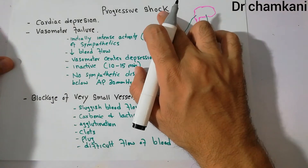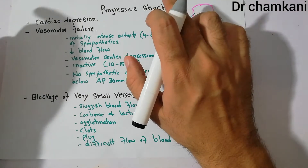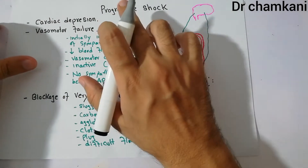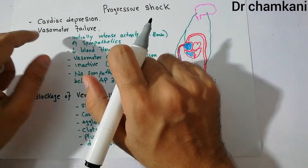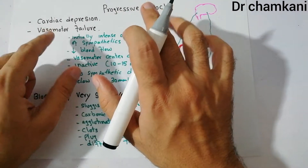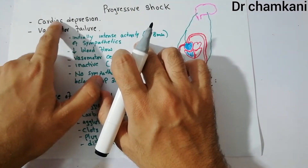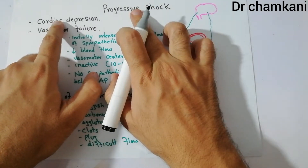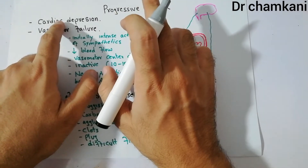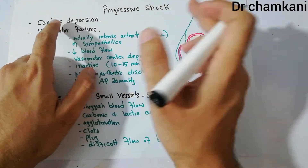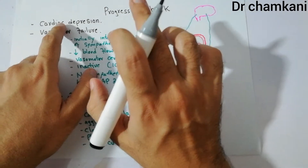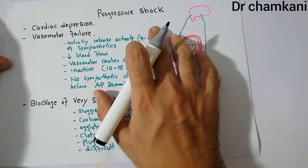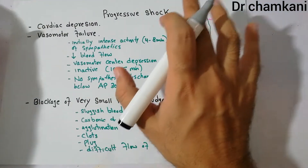Shock basically has three stages: first is non-progressive, then progressive, and finally irreversible. We also discussed the first factor which leads to progressive shock or converts non-progressive shock into progressive shock, and that was cardiac depression. We discussed all those things in detail in our last three to four lectures.